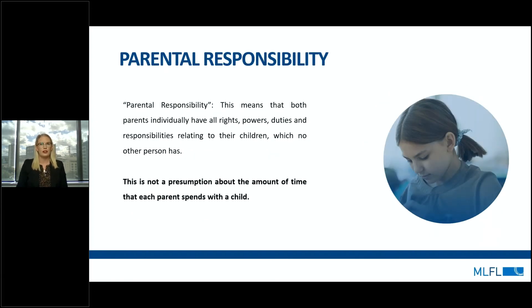Under the Act, both parents of a child who is not 18 have what is known as parental responsibility. This means that both parents individually have all rights, powers, duties and responsibilities relating to their children, which no other person has. Section 61 of the Act provides that when a court is making a parenting order in relation to a child, the court must apply a presumption that it is in the best interests of the child for the child's parents to have equal shared parental responsibility for the child. This is not a presumption about the amount of time that each parent spends with the child.